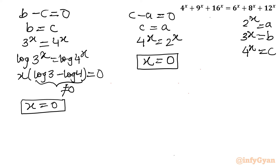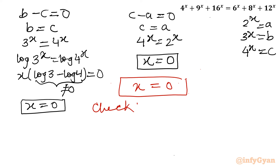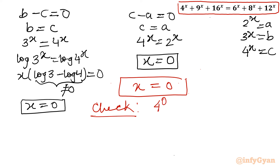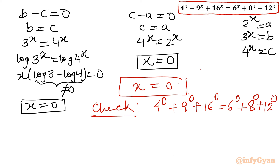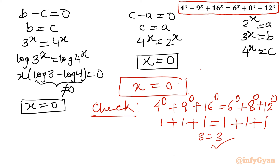So our overall solution is x = 0. Let's verify: substituting x = 0, we get 4⁰ + 9⁰ + 16⁰ = 6⁰ + 8⁰ + 12⁰, which is 1 + 1 + 1 = 1 + 1 + 1, i.e., 3 = 3. That confirms x = 0 is the true and only solution.